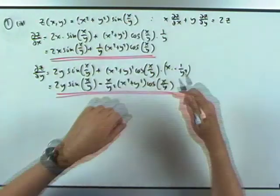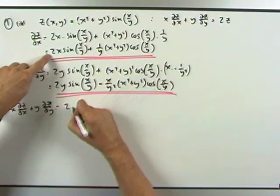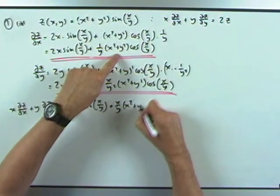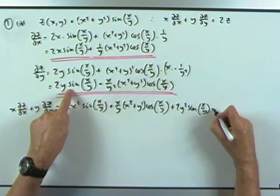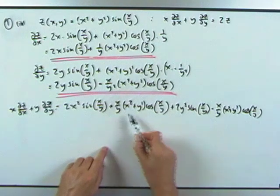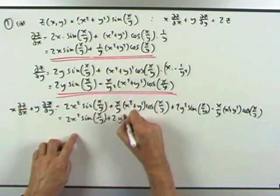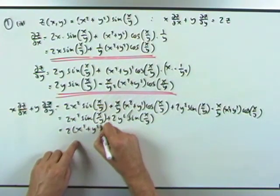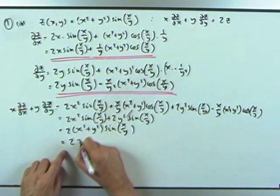Now combining: x times partial z by x plus y times partial z by y. That gives 2x²·sin(x/y) plus (x/y)·(x²+y²)·cos(x/y) plus 2y²·sin(x/y) minus (x/y)·(x²+y²)·cos(x/y). The cosine terms cancel, leaving 2x²·sin(x/y) plus 2y²·sin(x/y). Factoring out: 2 times (x²+y²)·sin(x/y), which is exactly 2z. Done.